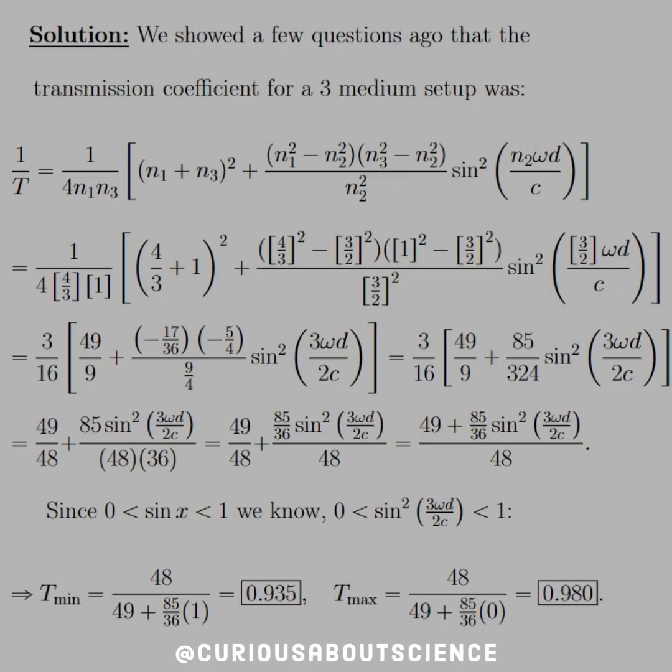So we just showed a few questions ago what the transmission coefficient was for a three-medium setup. So one over T is equal to that monstrosity that we showed two questions ago. So let's plug in everything we know. We have the water, four-thirds, air, one, and glass is three over two, so 1.5. Plug everything in, simplify it down.